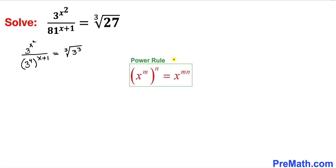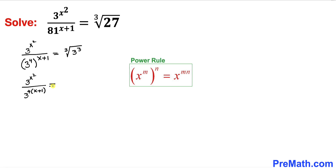Now let's recall this power rule. We are going to apply it on the denominator, so we are going to multiply out these nested exponents. This equation could be written as 3 to the power x squared divided by 3 to the power 4 times x plus 1.